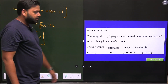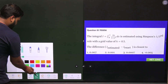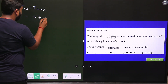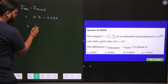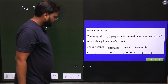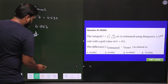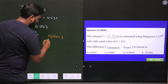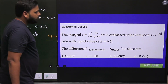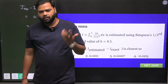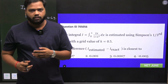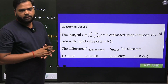Taking the difference: I_estimated − I_exact = 0.7 − 0.693 = 0.007. This is the final answer, and option number one is correct. This is a very easy question of the type we have solved in class — not only Simpson 1/3 but also Simpson 3/8 and the trapezoidal rule. Private Education will provide solutions to all questions asked in the examination. Thank you so much.